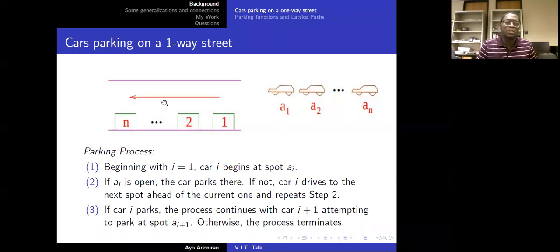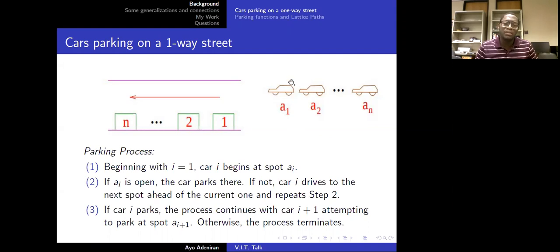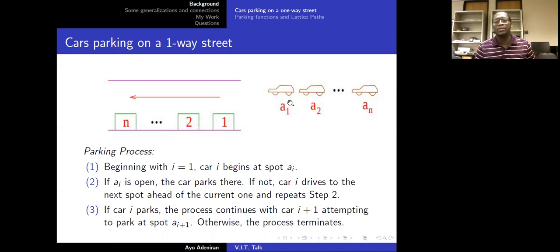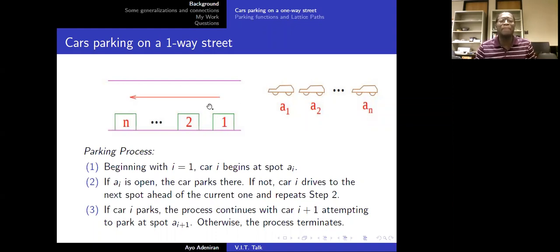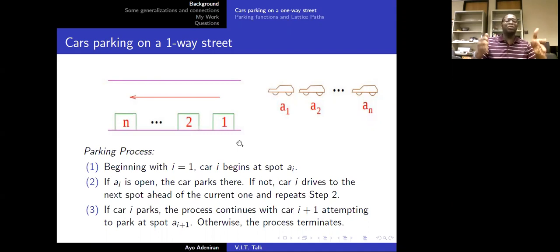Each car has a preference A1, A2, and car N has AN. All of these are numbers in the set {1, 2, ..., N}. Car one will start from spot A1 and move forward. If the spot is empty, it parks there. If it's not empty, it moves to the next available spot and parks there. If every car is able to park based on their preferences — not necessarily where they preferred, but at least somewhere on the street — then we call that preference sequence a parking function.